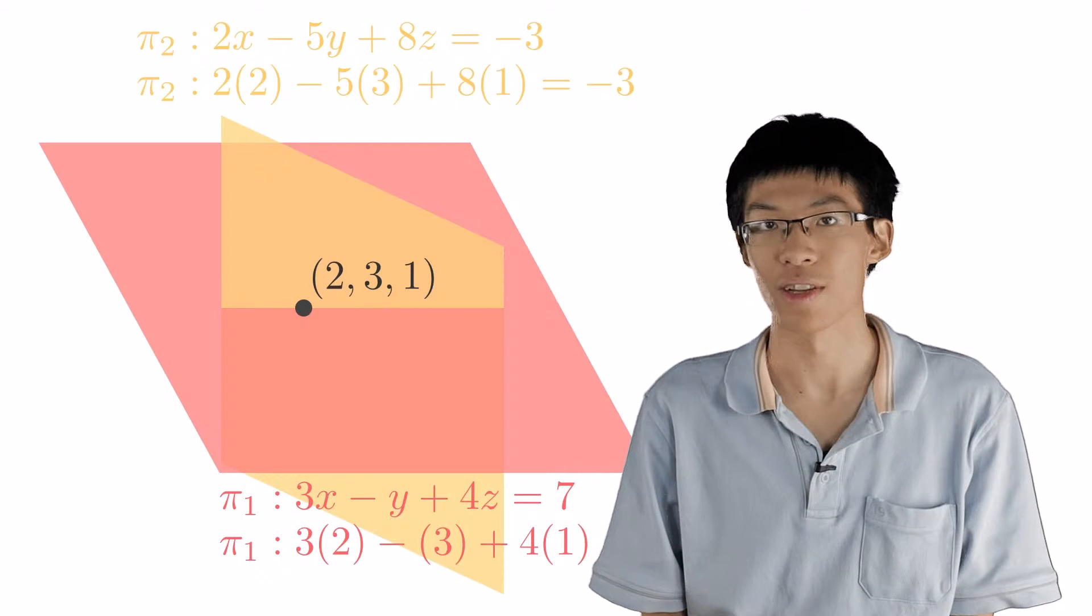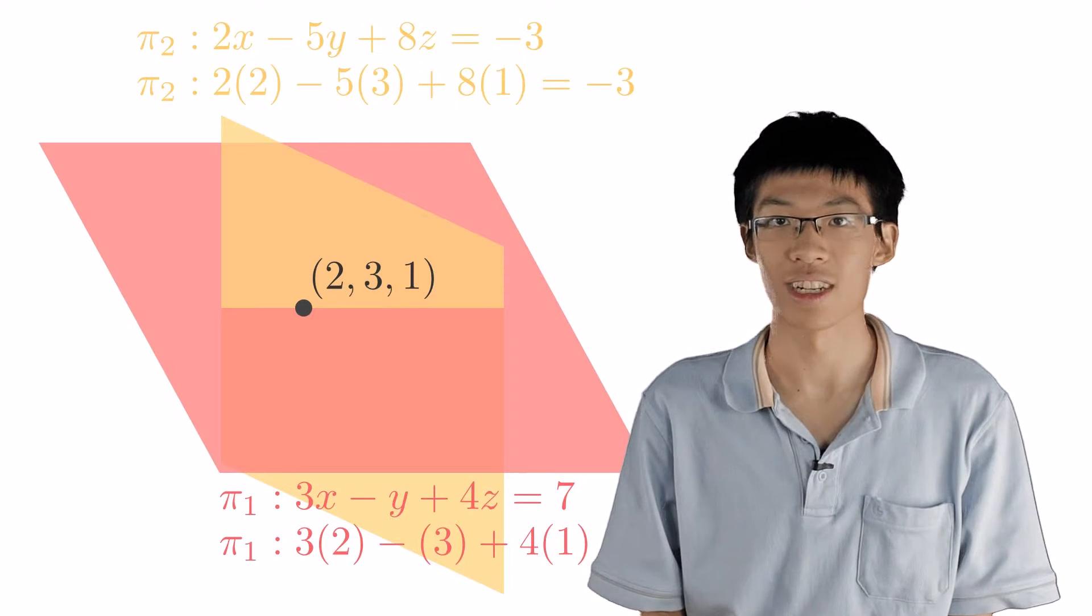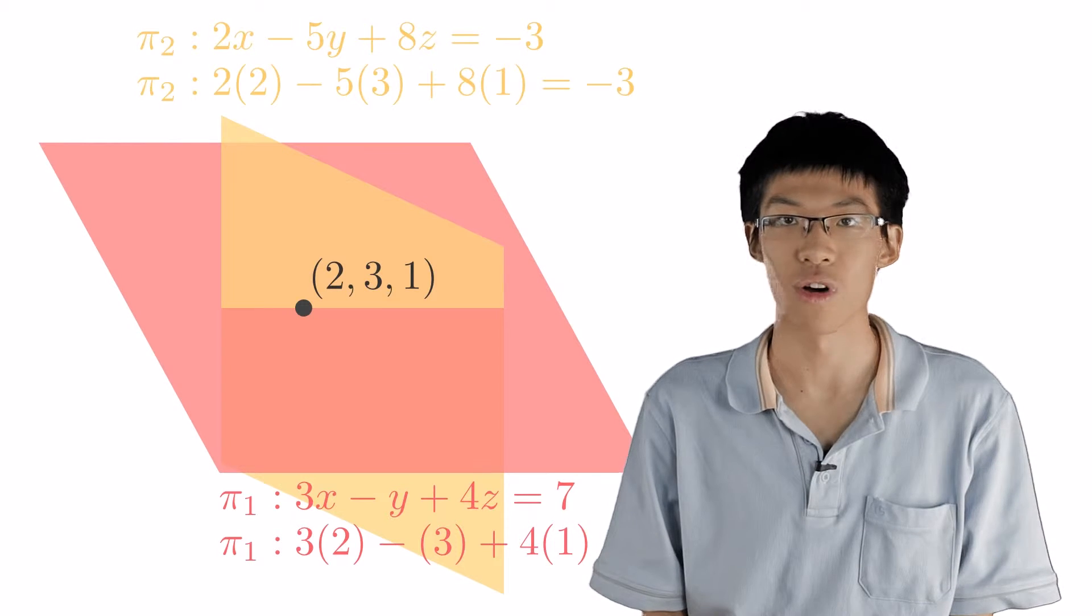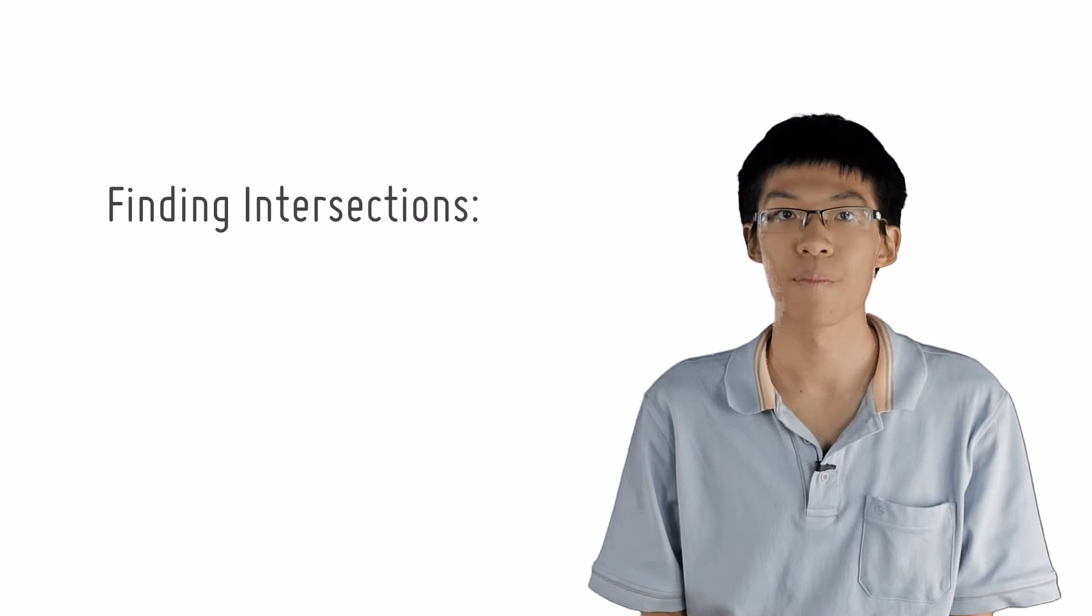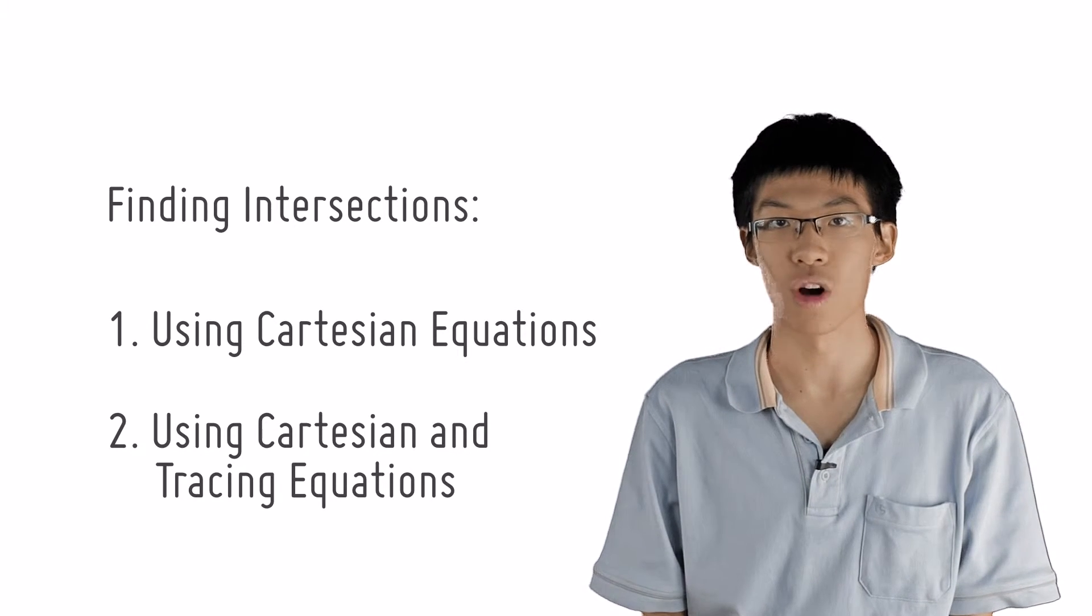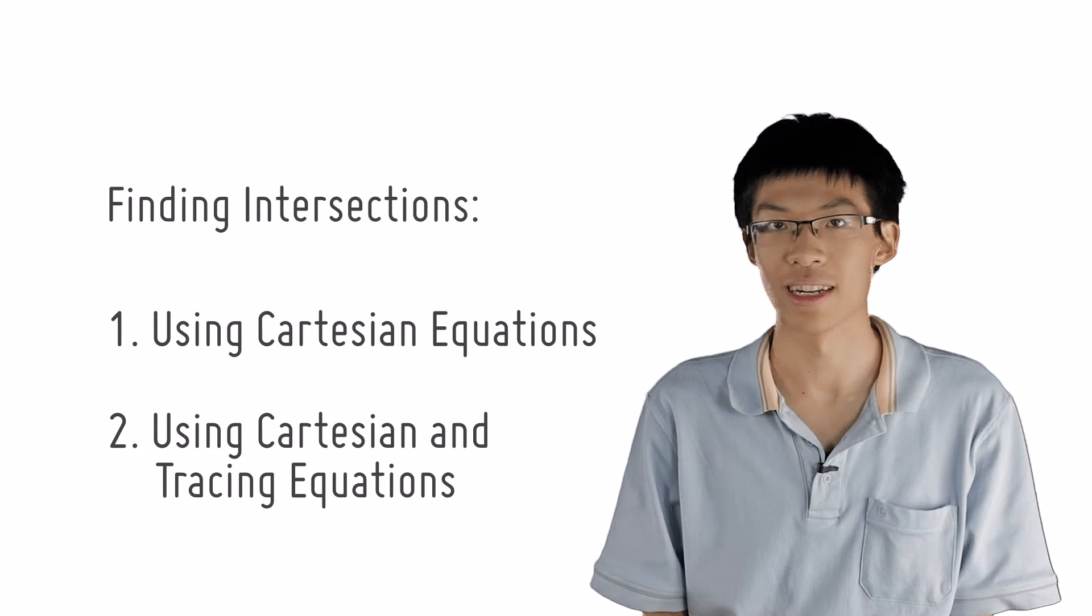This illustration shows that whenever we are finding an intersection, we are actually solving simultaneous equations. There are two ways to find intersections, solving Cartesian equations only, or using a combination of Cartesian and parametric equations.